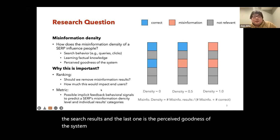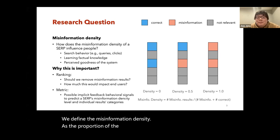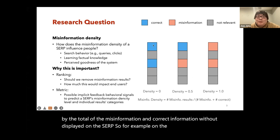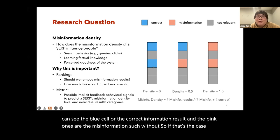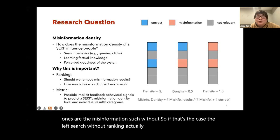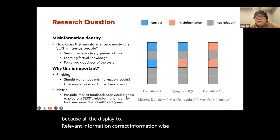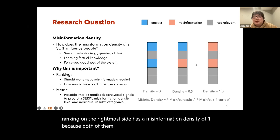We define misinformation density as the proportion of misinformation results divided by the total of misinformation and correct information results displayed on the SERP. On the left side, you can see the blue cells are the correct information results and the pink ones are the misinformation results. The left search result ranking has a density of zero because all results displayed are correct information ones.